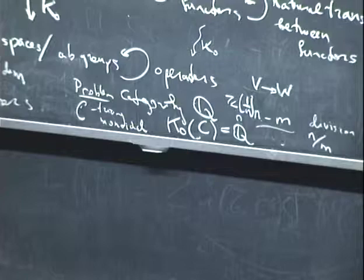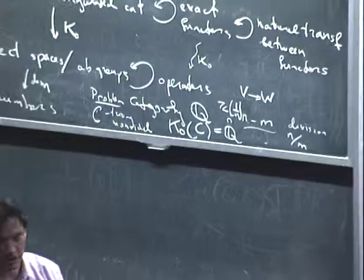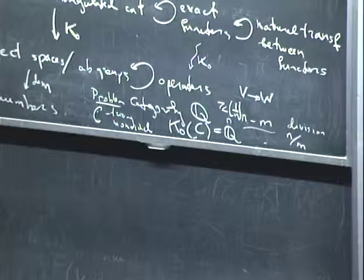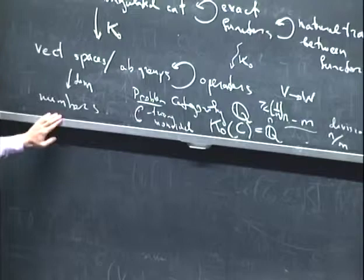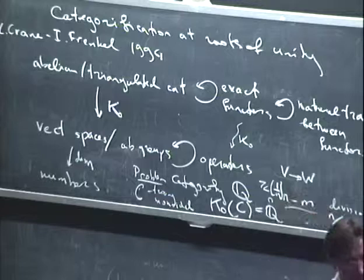If you take the category of finite-dimensional vector spaces over a field, the K0 group is Z. So you can think of the monoidal category of finite-dimensional vector spaces as the categorification of the ring of integers.